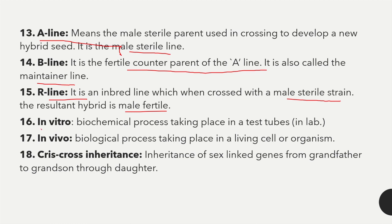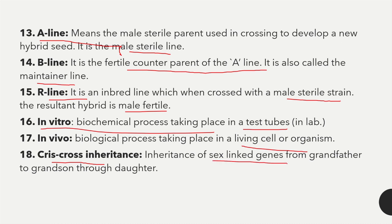In vitro refers to a biochemical process taking place in a test tube, while in vivo means a biological process taking place in a living cell or organism. Criss-cross inheritance refers to the inheritance of sex-linked genes from grandfather to grandson through the daughter.